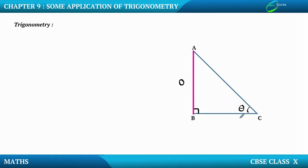For this theta we have BC as the adjacent side. And the side which lies opposite to 90 degrees is called the hypotenuse side, so we have AC as the hypotenuse.